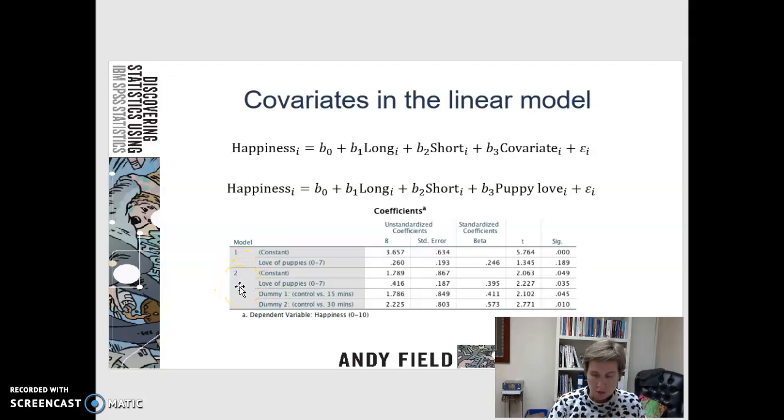If you have a look on page 428, this second model includes love of puppies, 15 minutes and 30 minutes of puppy time. And how does this model ultimately predict a person's happiness? Based on these beta coefficients right here, we can predict whether or not somebody is more or less happy given time that they've spent with a puppy and how much they love the puppy.